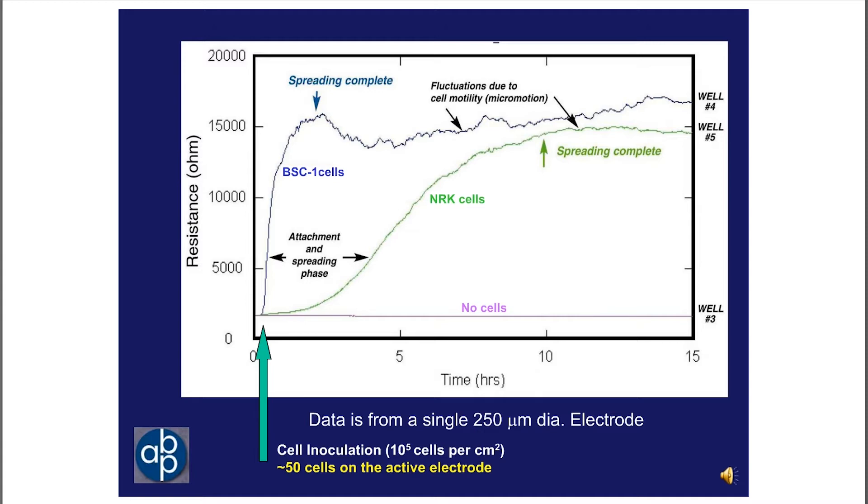The fluctuations that we see on top of the curves from wells with cells are due to what we term micromotion, due to the motion of the cells upon the electrode, even in the confluence sheet. The ECIS measurement is extremely sensitive to these motions, especially when one is using a well that has but a single active ECIS electrode. As we bring in wells with more electrodes, this stochastic nature of the cell behavior, the motion of the cells, tends to be averaged out, and the curves become much smoother.